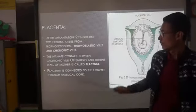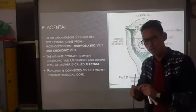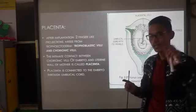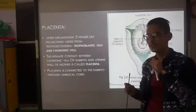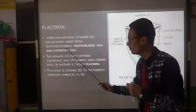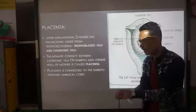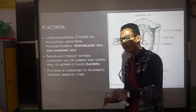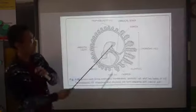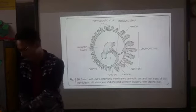When we talk about placenta: after implantation — when the blastocyst is implanted in the endometrium lining of the uterus — two finger-like projections start appearing from the trophectoderm. These finger-like projections are the trophoblastic villi and the chorionic villi, both produced from the trophectoderm after implantation.